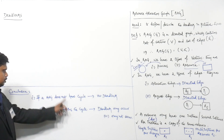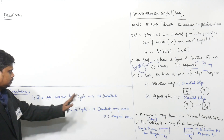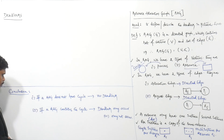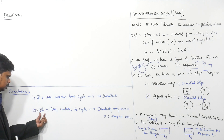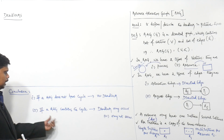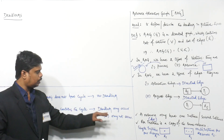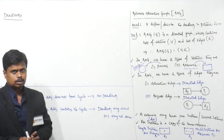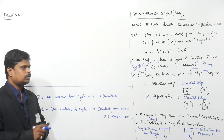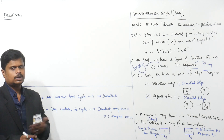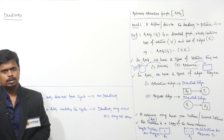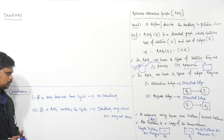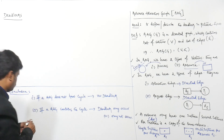Coming to this crucial point: if a RAG does not have a cycle, then there is no deadlock — that is fine. But if the RAG contains a cycle, then deadlock may or may not occur. This is the doubt — we are not confidently saying no deadlock when the RAG contains a cycle. That is what we are going to see here.